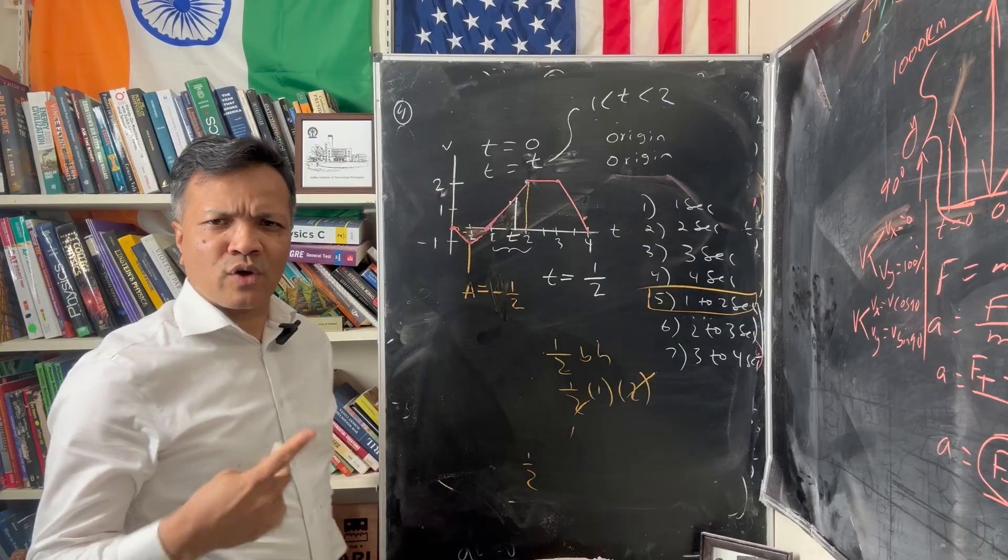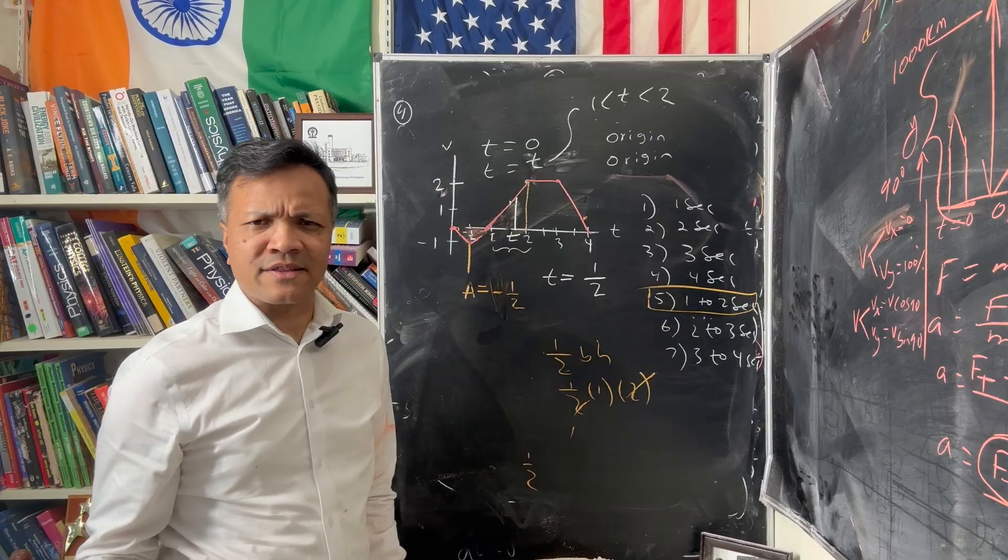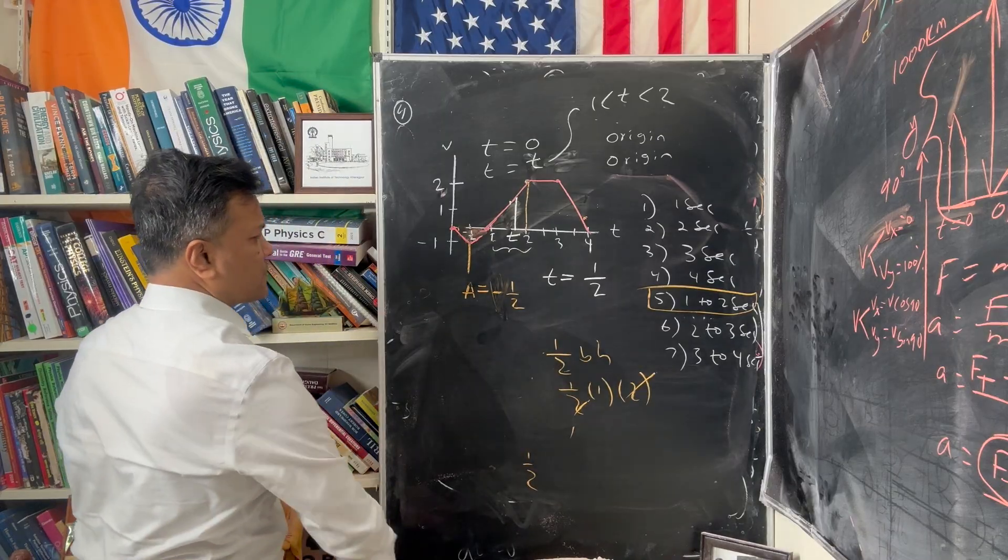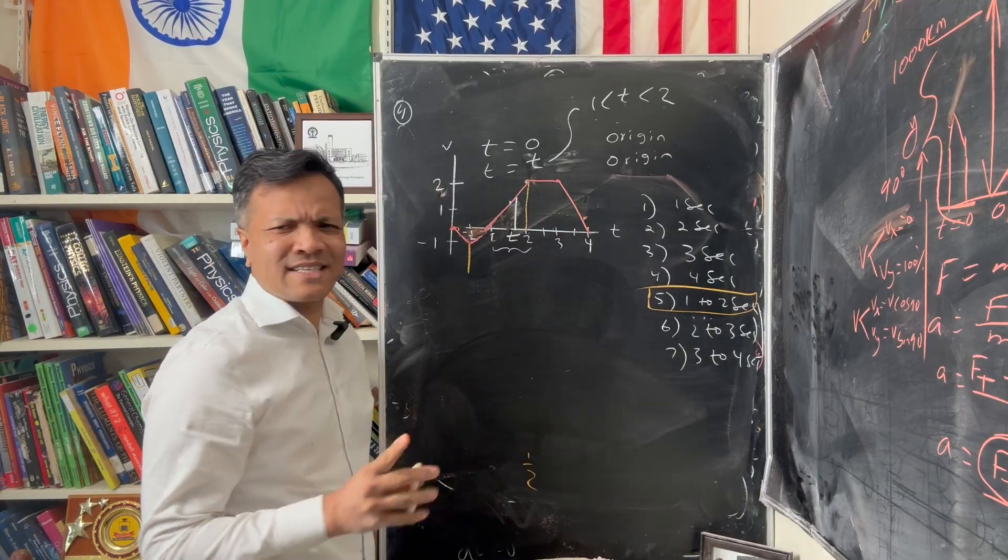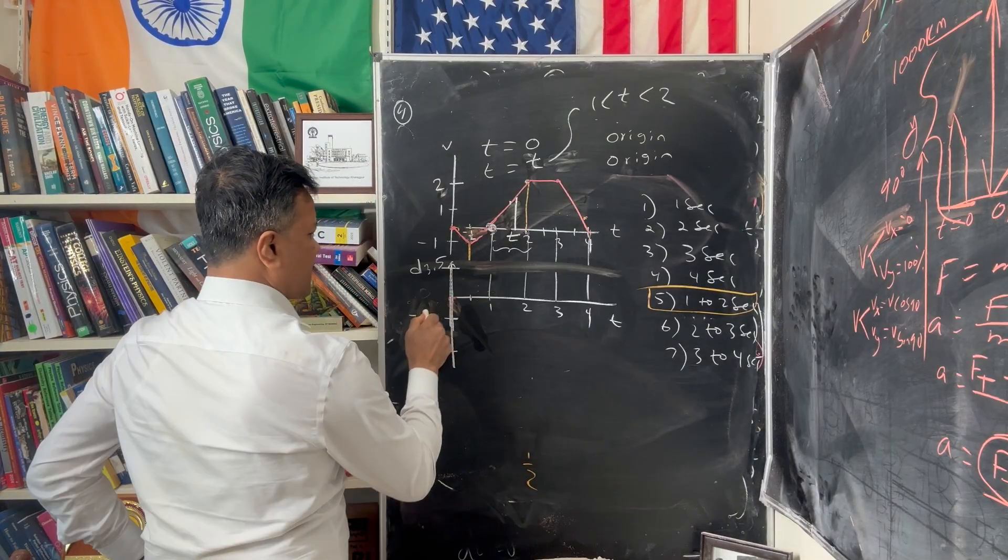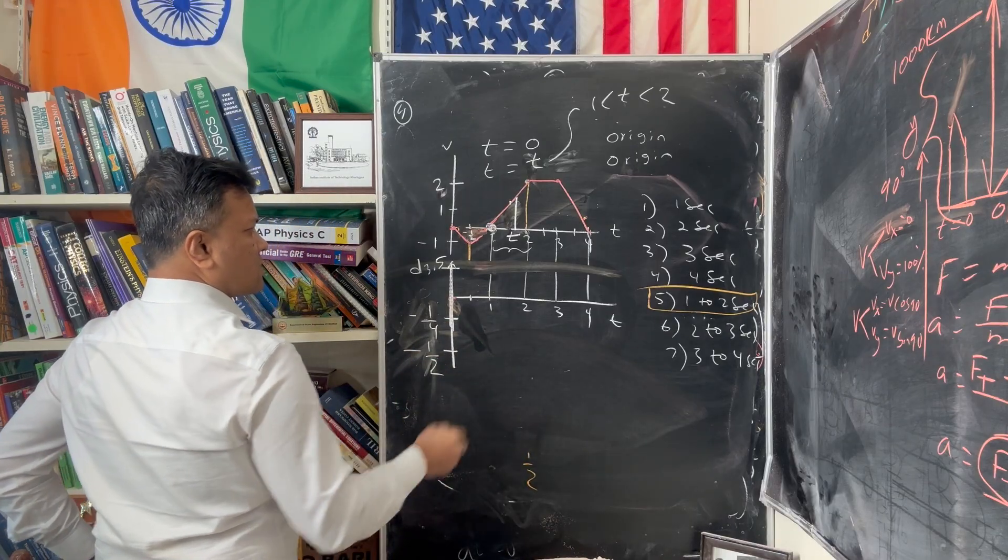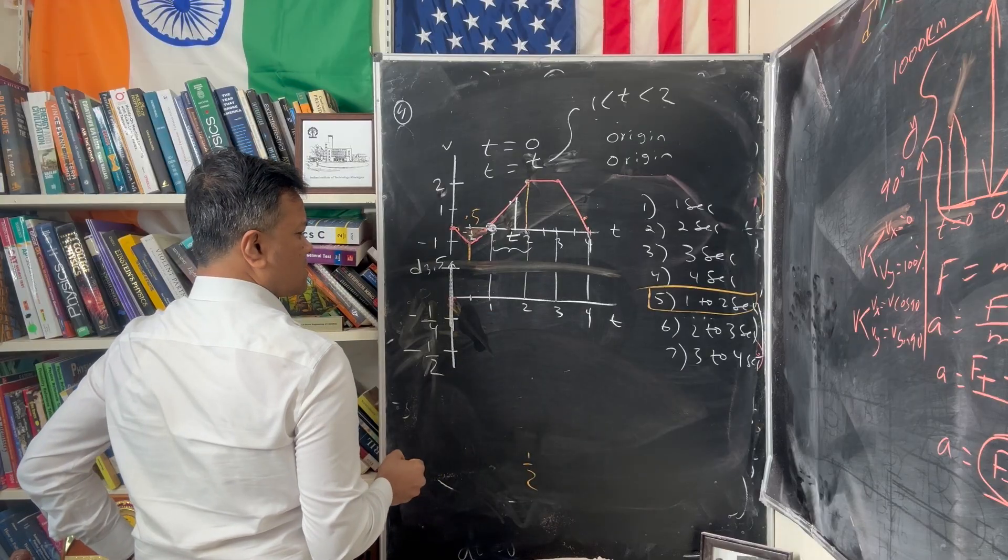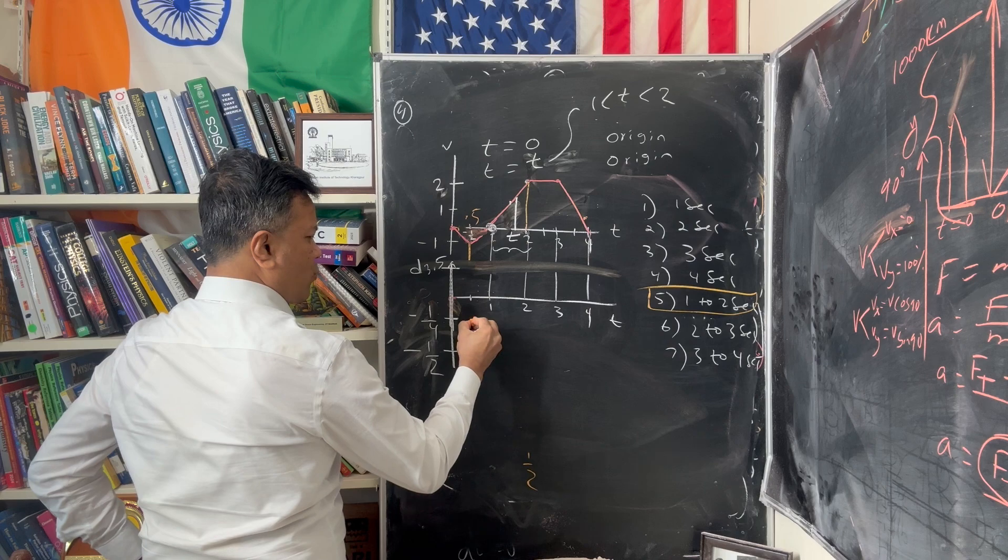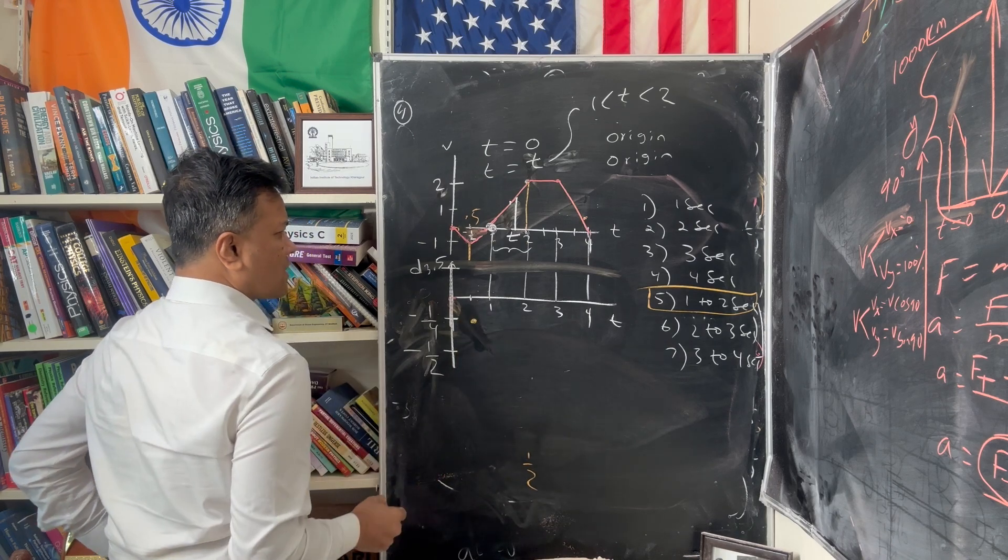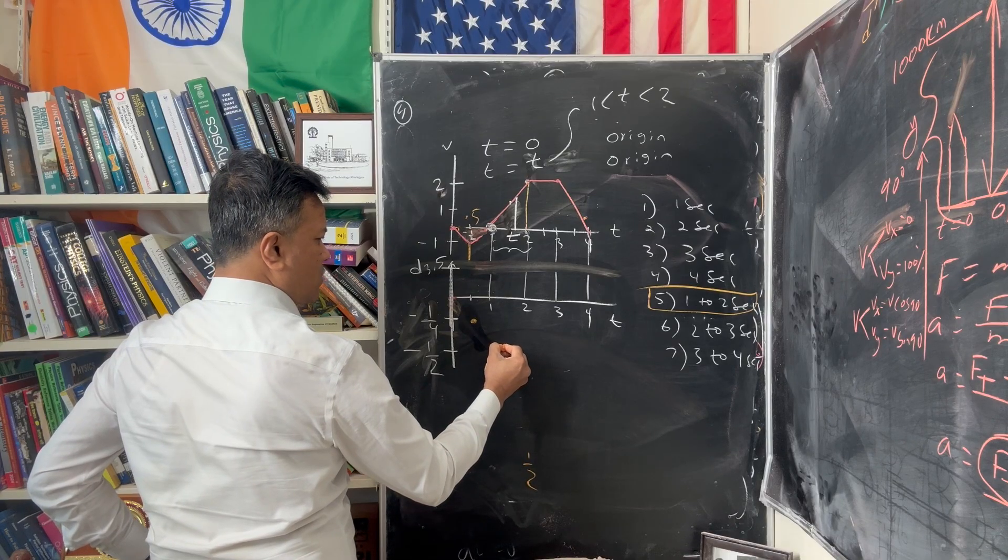It could be 1.1, 1.2, 1.3, 1.4, 1.5, 1.6, 1.7, 1.8, 1.9, anything. So let's find it out. Let's draw a position-time graph so you understand better. At 0.5 seconds, you are negative 1/4 away from the origin. At 1 second, you are negative half away from the origin.